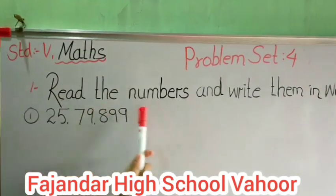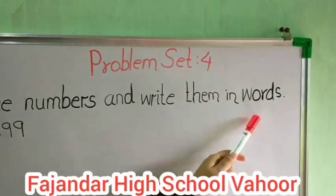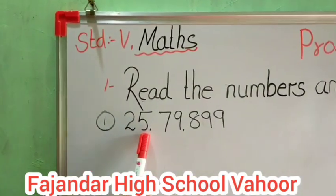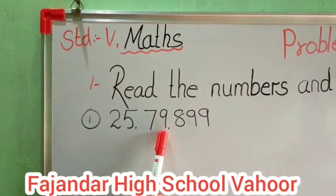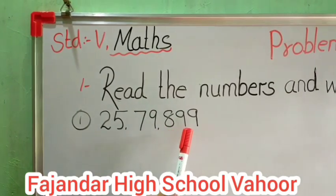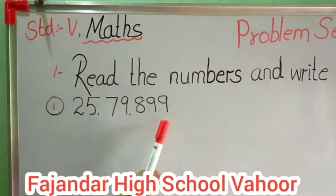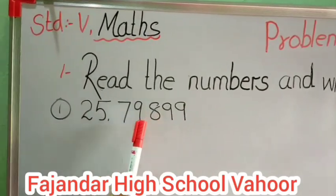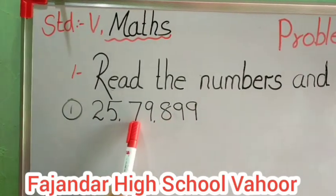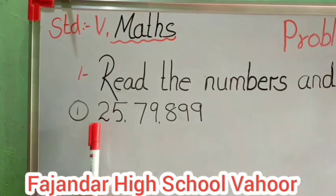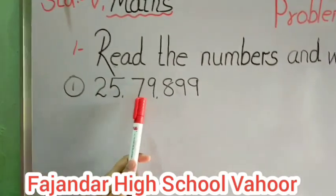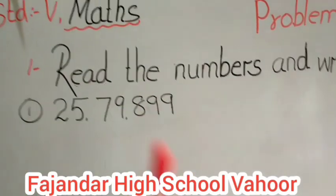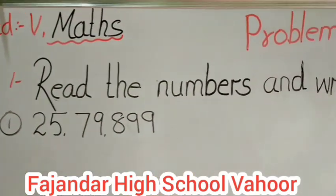Read the numbers and write them in words. Question number 1 is 25,79,899. Look at the place values: units, tens, hundreds, thousands, ten thousands, lakh, and ten lakh. 25,79,899. I will write it in words.